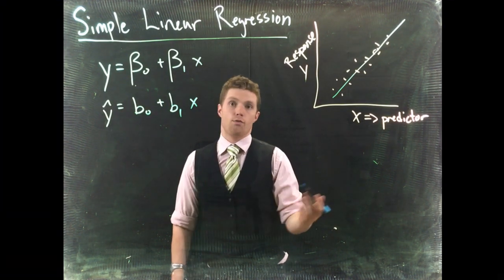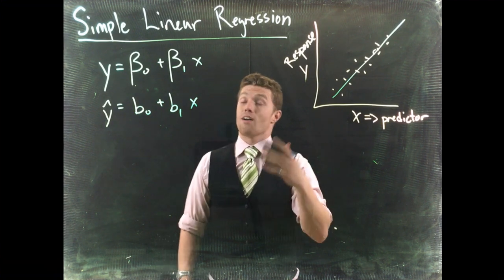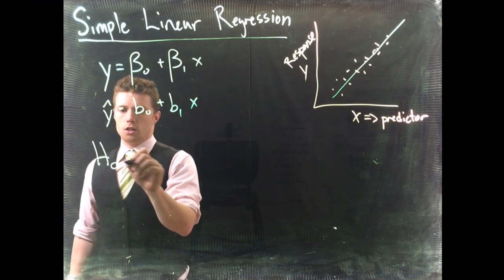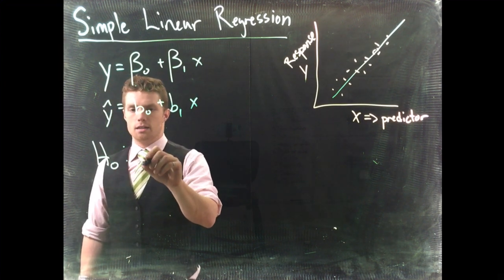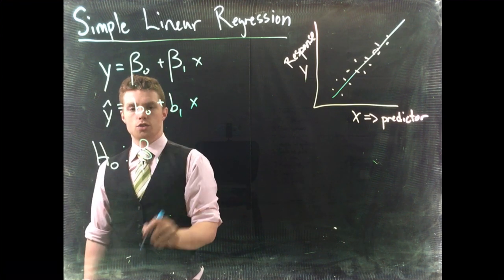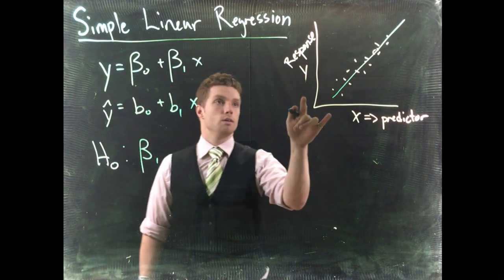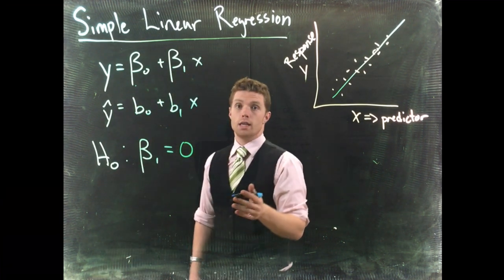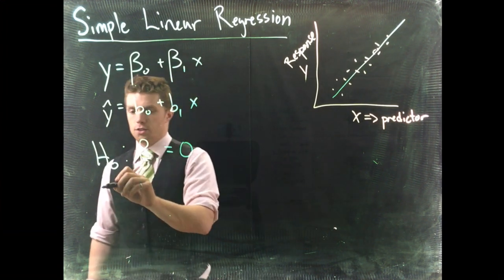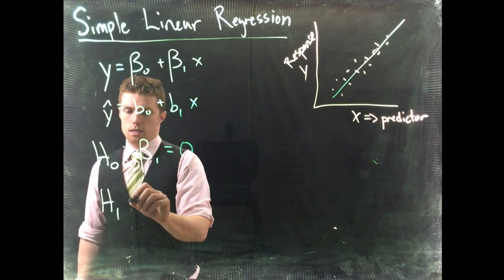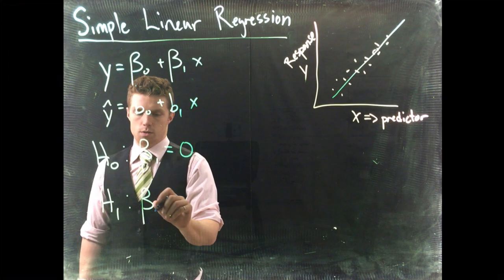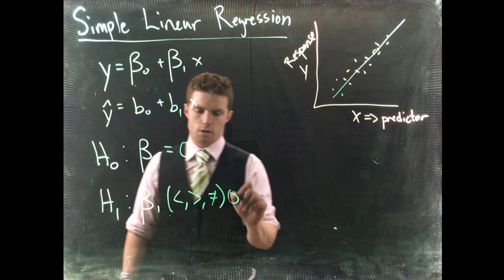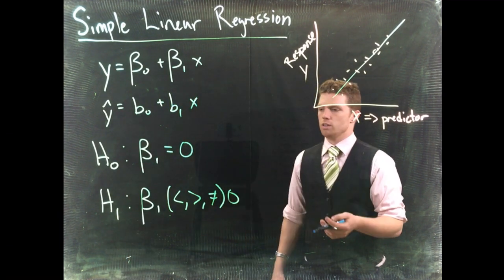We want to estimate this. And for our hypotheses, then, in regression analysis, we have that the null hypothesis is that the true slope of these two variables is equal to zero. There's no relationship. That's the baseline assumption. And then the alternative that we can do is beta 1 is either less than, greater than, or not equal to zero. Most of the time we do not equals for these, but you could do the other ones.